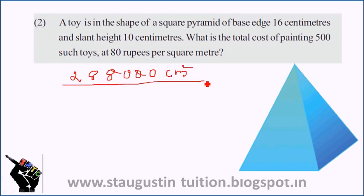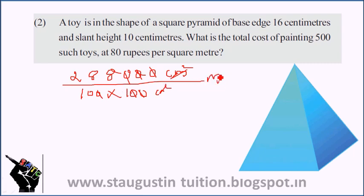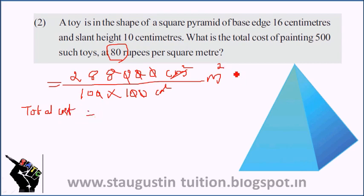Convert it to m². This is 100 into 100, giving 10,000. Total cost: we divide the total surface area by 10,000 to convert to m², then divide by 10, cancelling zeros.